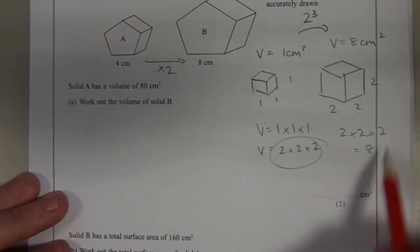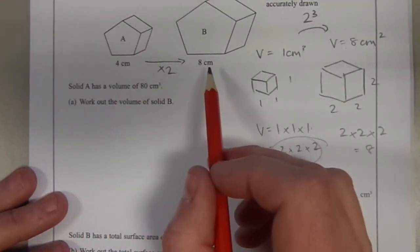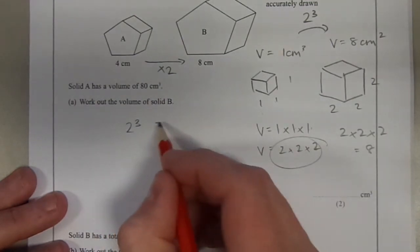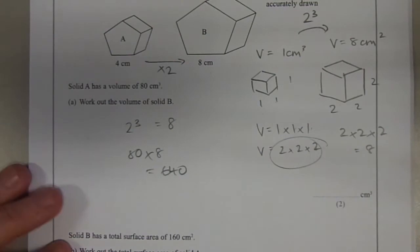So therefore, applying that over here, the scale factor of enlargement of length is 2. The volume is going to be 2 cubed times bigger. 80 times 8 is 640 centimetres cubed.